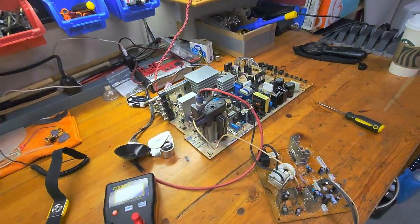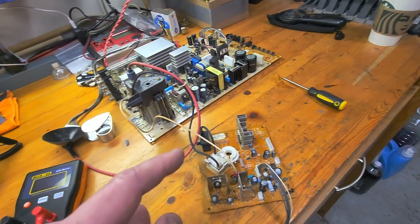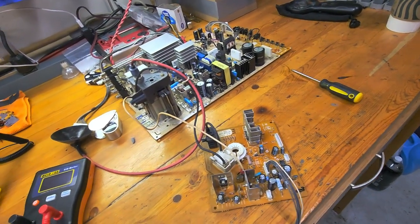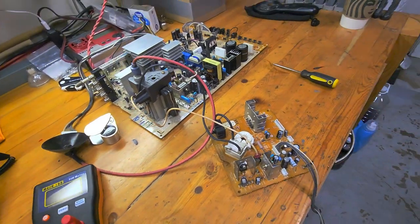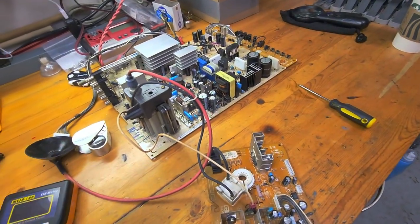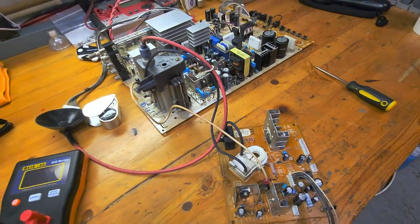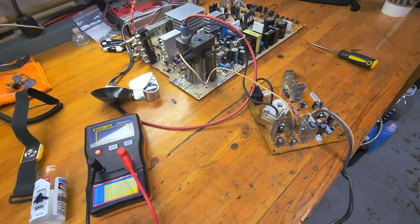So this is a Sony Vega Trinitron board and the flyback transformer neck board that I have removed. There's nothing really wrong with the set, it's just old. But I know that these capacitors do have a limited lifespan and I'm going to go through the board.